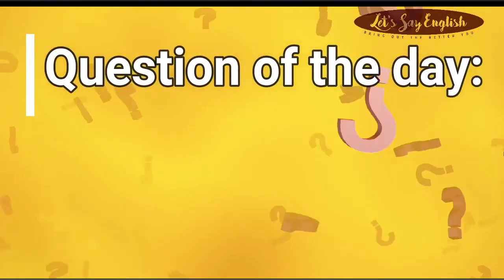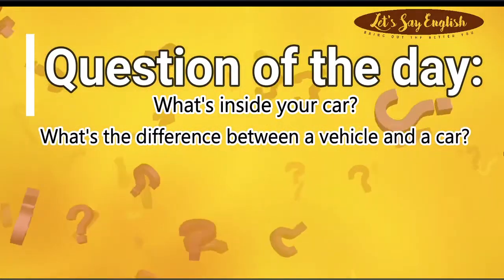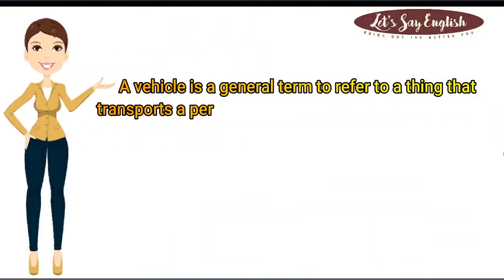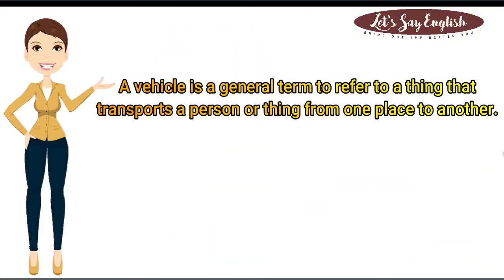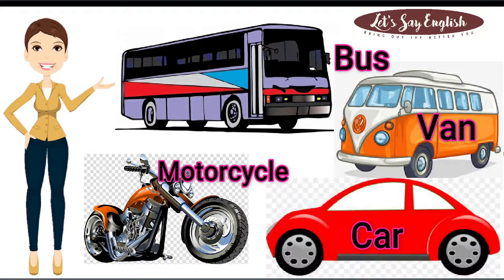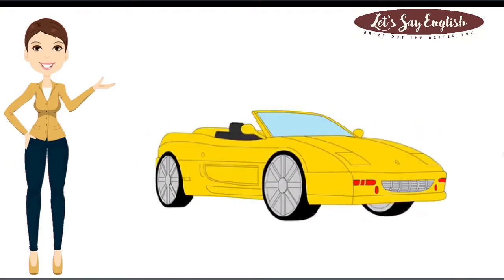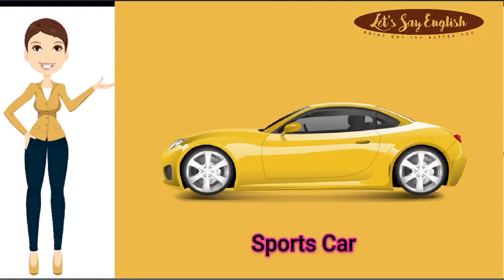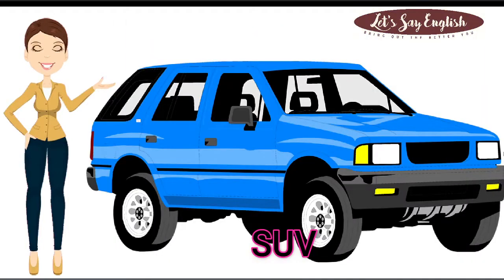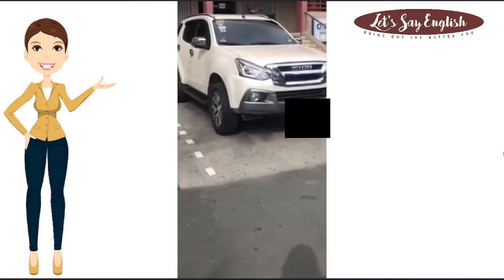Question of the day: what's inside your car? What's the difference between a vehicle and a car? A vehicle is a general term to refer to a thing that transports a person or thing from one place to another. Examples of this are buses, motorcycles, vans, and cars. A car is a four-wheeled vehicle and it has different types — we have the sedans, the sports cars, the SUVs, and the minivans.